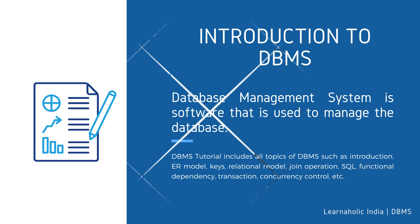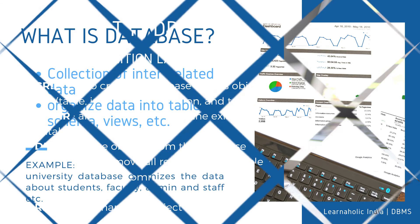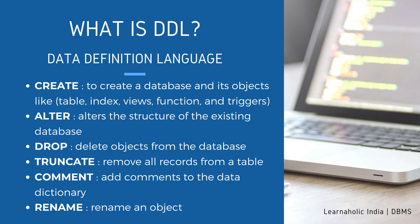First, let's see what is a database. A database is a collection of interrelated data which helps in efficient retrieval, insertion, and deletion of data, and organizes data in the form of tables, views, schemas, reports, etc. For example, a university database organizes data about students, faculty, admin, and staff, which helps in efficient retrieval, insertion, and deletion of data. Next, what is DDL? DDL is the short name of Data Definition Language.